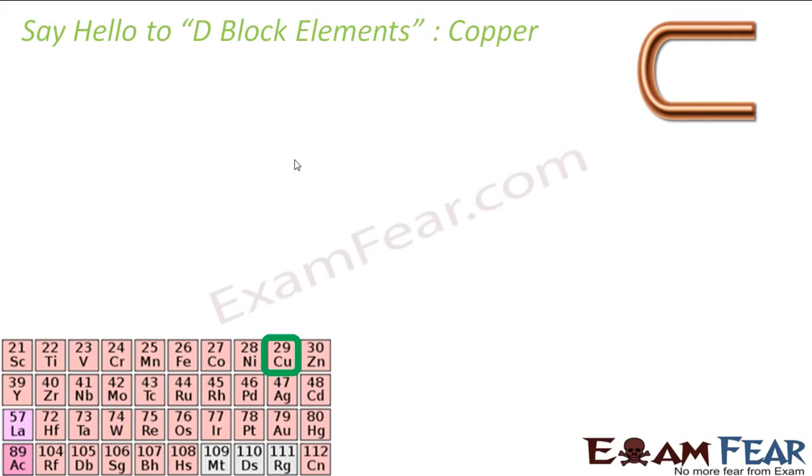And this is used in copper. Copper has different color. Copper doesn't have the typical white color which D block elements have. Copper has different color, atomic number 29, symbol Cu, period 4. This is reddish brown color. This is ductile. You know copper is ductile and we create copper wires out of it.